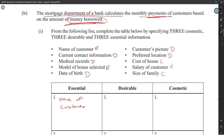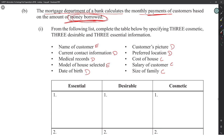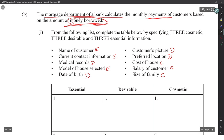The picture could be cosmetic, though if needed to track non-payment it becomes desirable. Model of the house could be cosmetic since all they want is the amount borrowed and monthly payments. We need at least three essential items, so current contact information should be essential — without it you can't contact the customer.